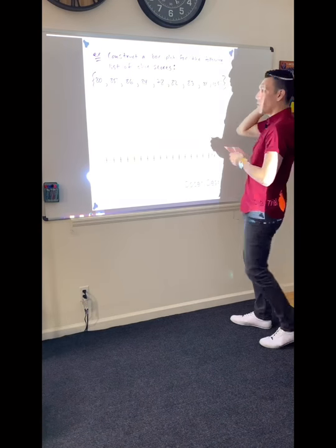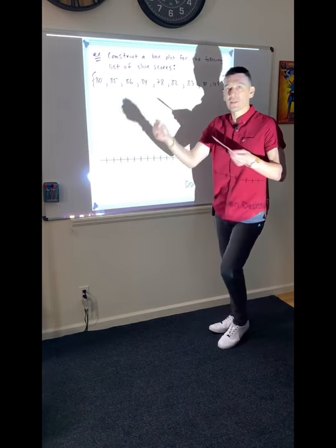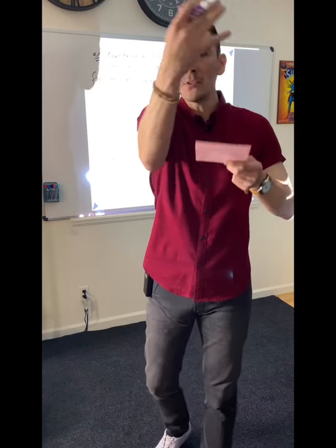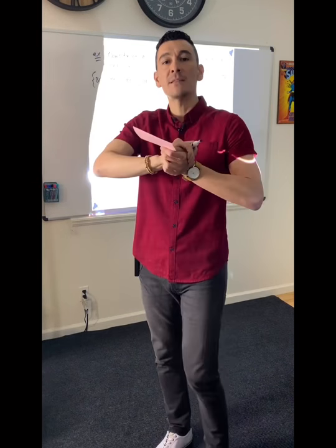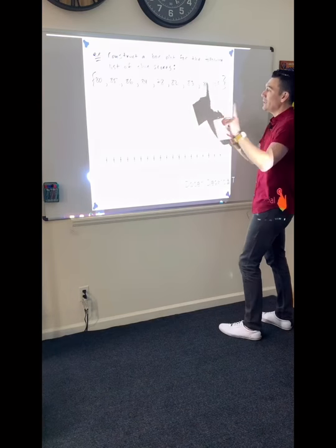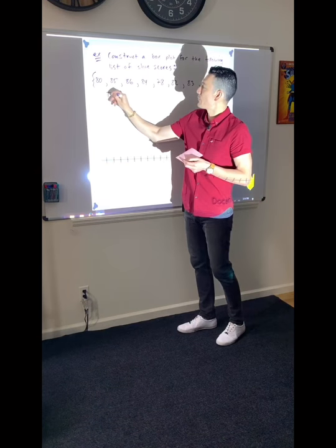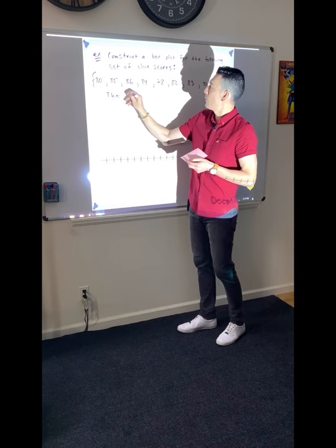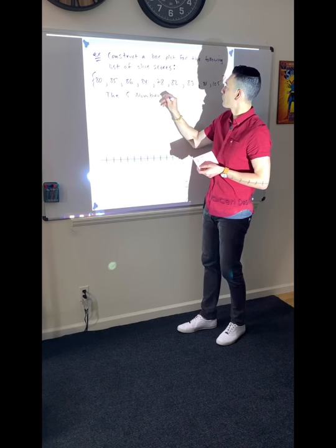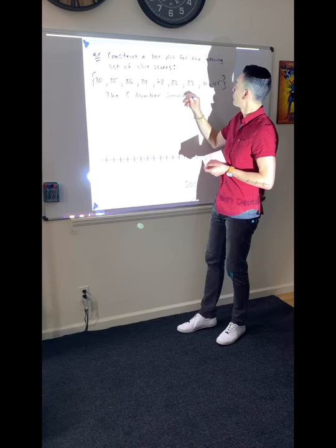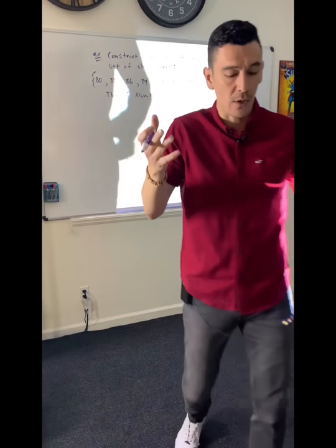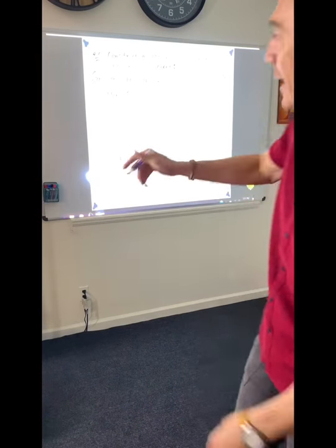So why don't we construct a box plot? Let's just make a box plot and then you can start your exit ticket. For that, we need the five-number summary. So let's unscramble these numbers and write them down from least to greatest.